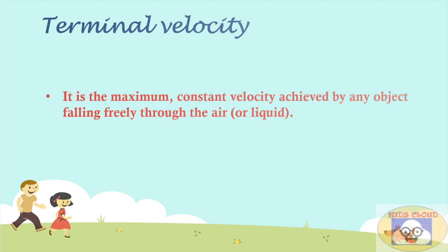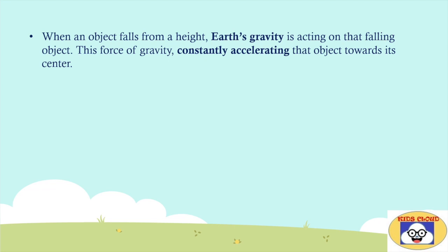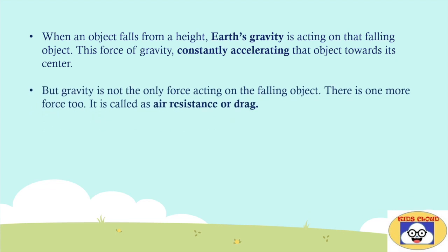When an object falls from a height, Earth's gravity is acting on the falling object. This force of gravity constantly accelerates that object towards its center. But gravity is not the only force acting on the falling object. There is one more force too. It is called air resistance or drag. This we have learned in our Air Friction video.